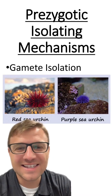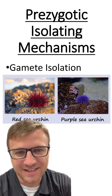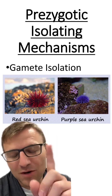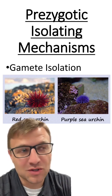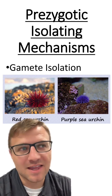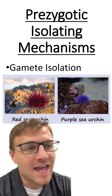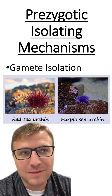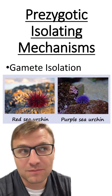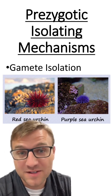And lastly is gamete isolation. The red sea urchin and purple sea urchin should reproduce — they have the same mating season, they live in the same area, everything's the same — but for some reason the gametes don't go together and form a zygote.